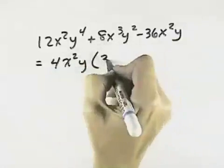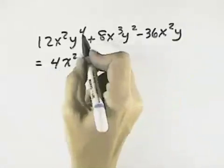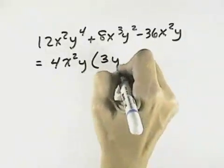If we divide the 12 by 4, we get 3. x squareds both divide out. y to the 4th, dividing out one of them, leaves a y cubed.